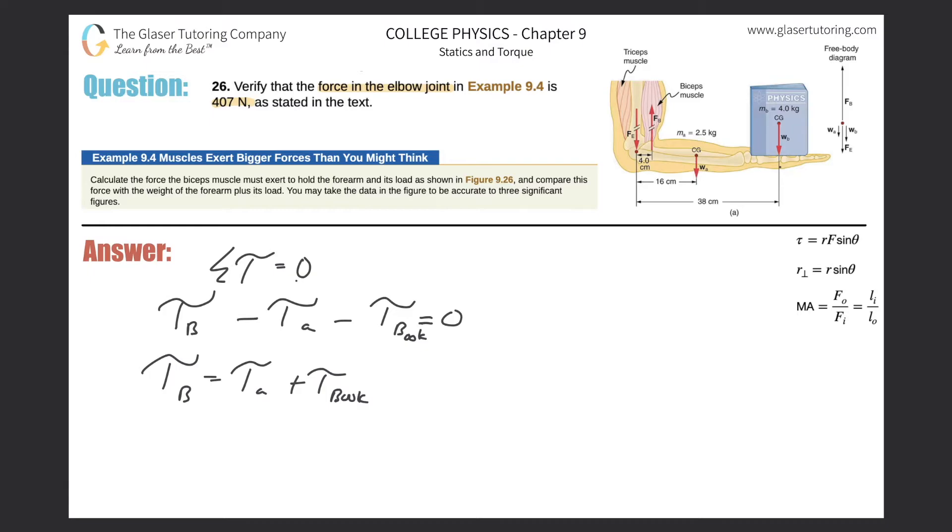Expanding on these now, the lever arms are all perpendicular, so I don't have to deal with any angles in this problem. So it would then be the force of the bicep times the lever arm of the bicep should equal then the force of the arm, or the weight of the arm that is, multiplied by the lever arm of the arm plus then the weight of the force of the book times the lever arm of the book.